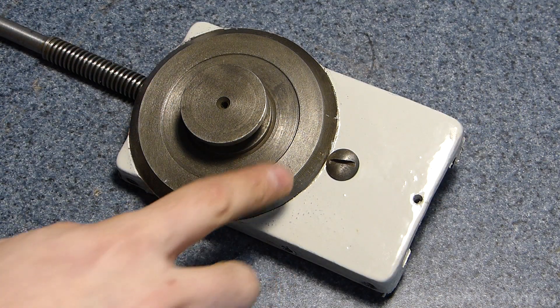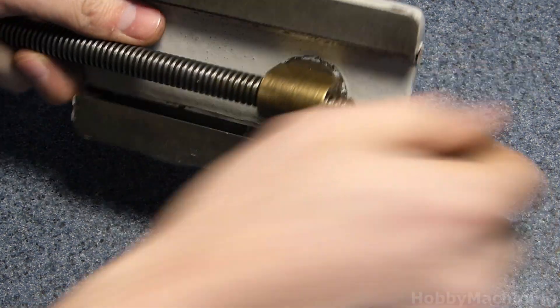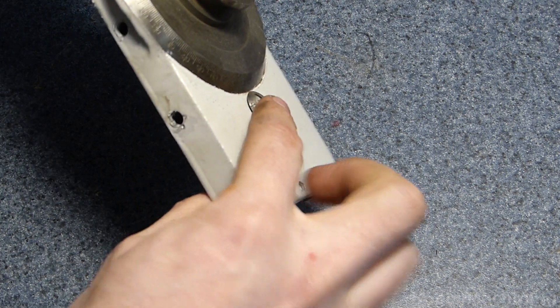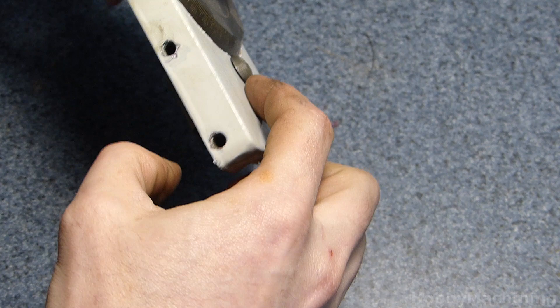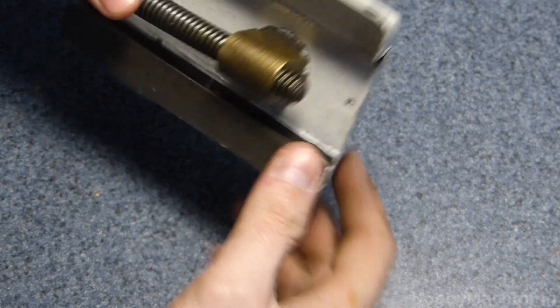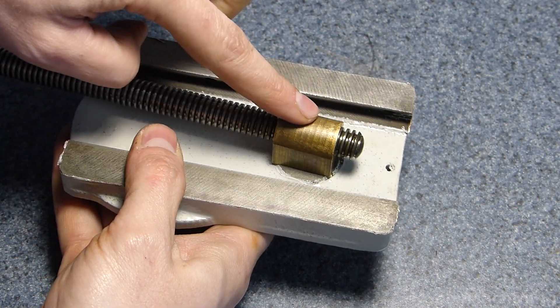Another source of play can be easily represented by looking at how our feed screw nut interfaces to our device simply with a screw. That screw is loose and that results in play of this whole nut. And that's also going to result in play during movement.